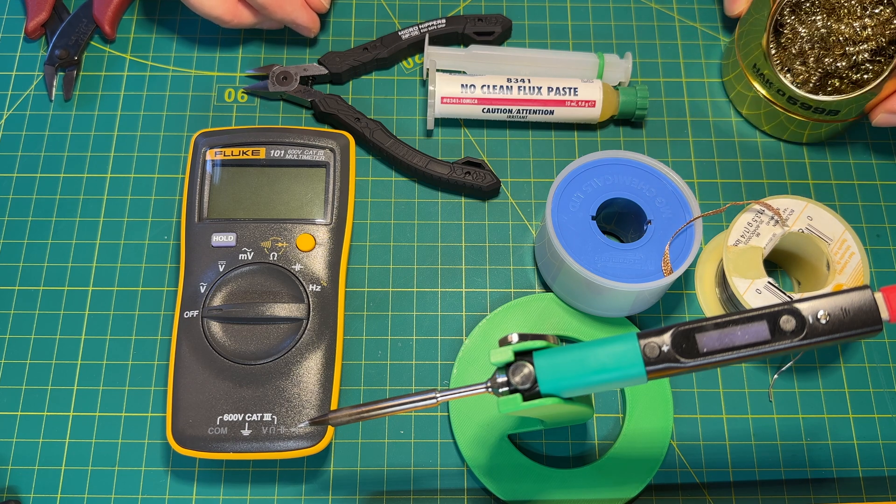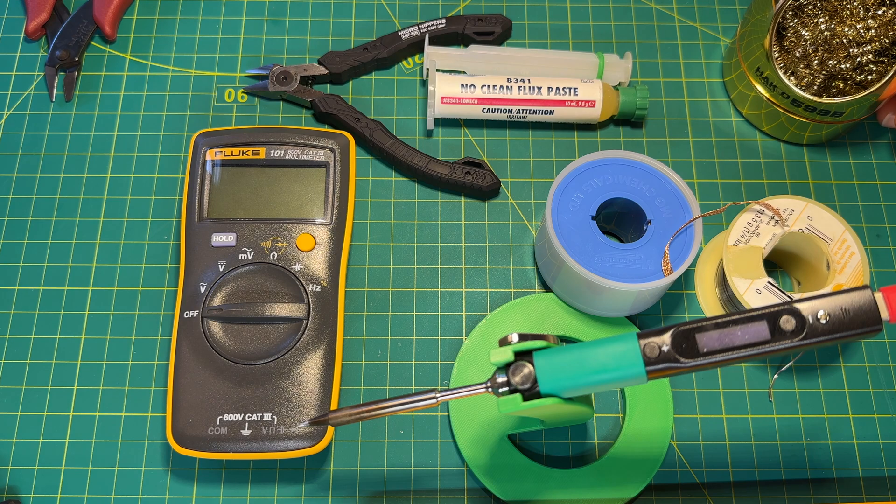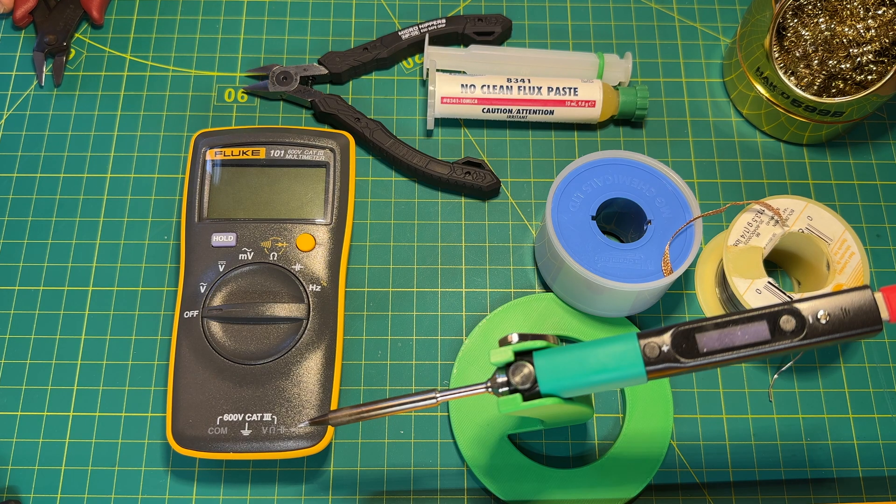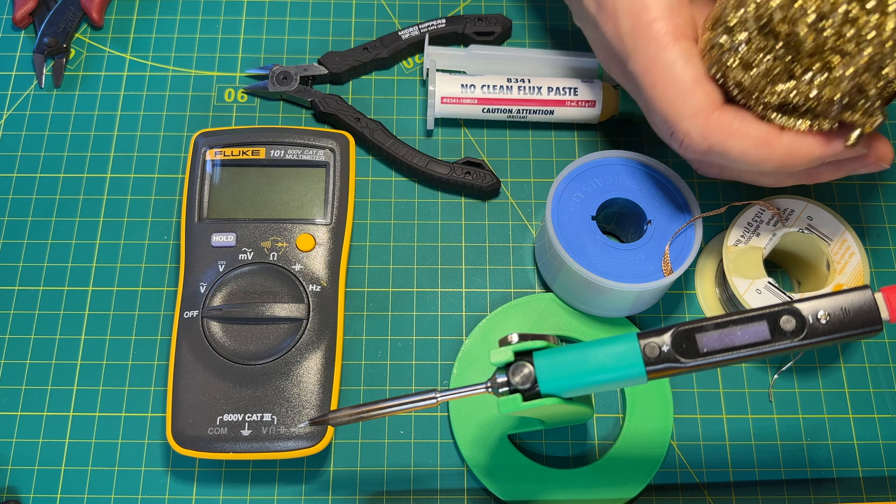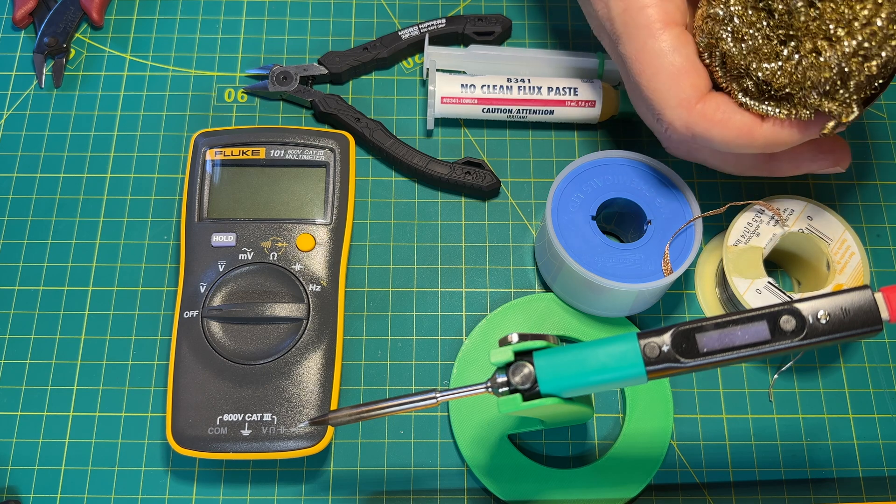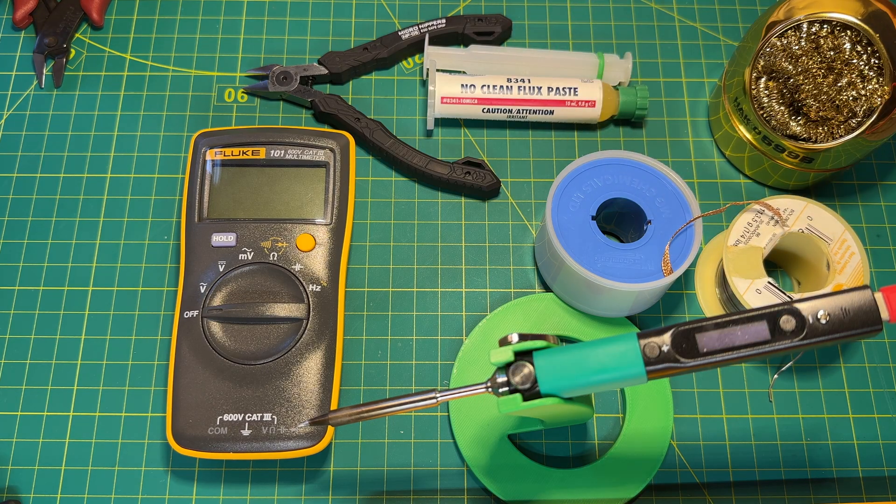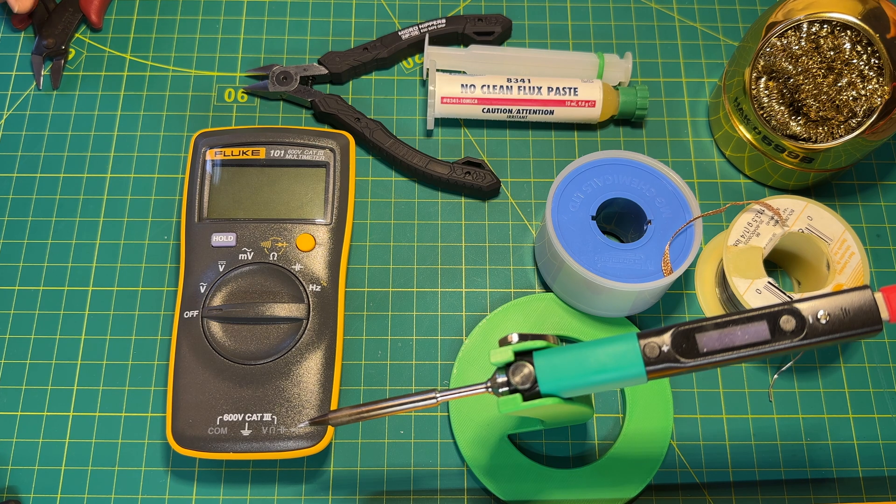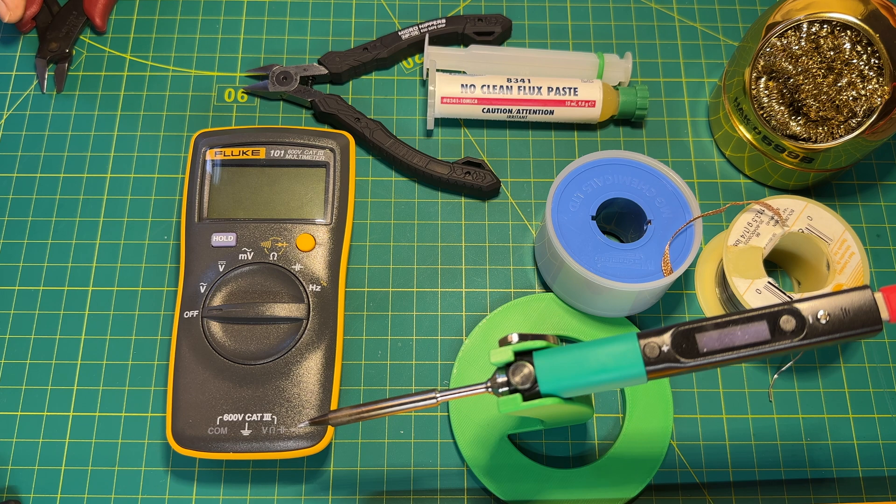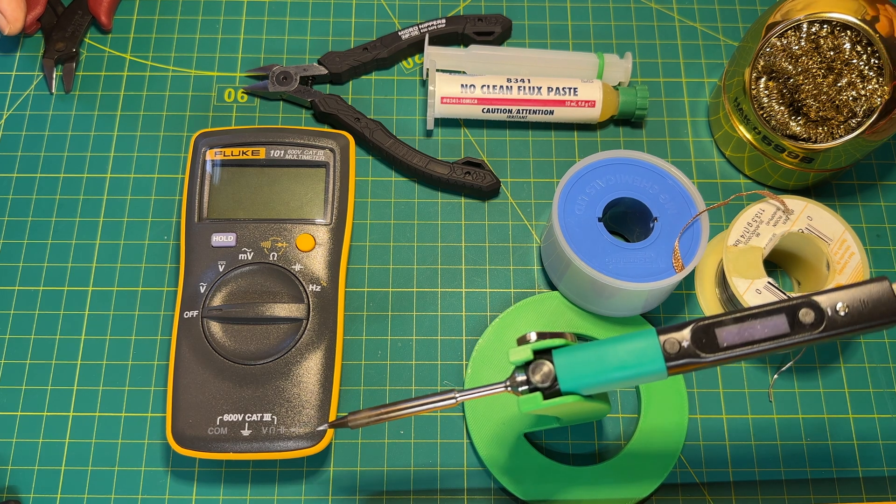And get some tip cleaning brass sponge. It works much better than those wet sponges. You can always clean this or just get a new sponge when it's filled with solder dust. Don't rely on those wet sponges because they drop the temperature of the soldering iron, and sometimes you might end up getting chunks of them stuck on the tip of your soldering iron.